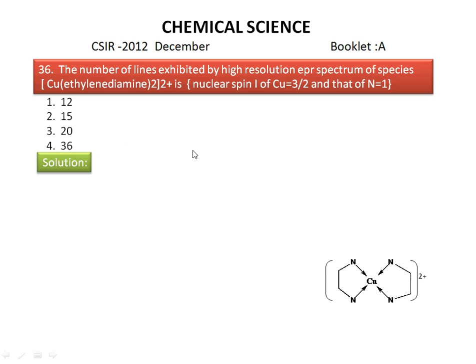This is the structure of diethylenediamine copper 2 plus complex. In this structure we have 1 copper nucleus and 4 nitrogen nuclei. So we have to calculate the number of EPR lines for copper and number of EPR lines for nitrogen, then multiply these numbers to get the total number of EPR lines for the diethylenediamine copper 2 plus complex.